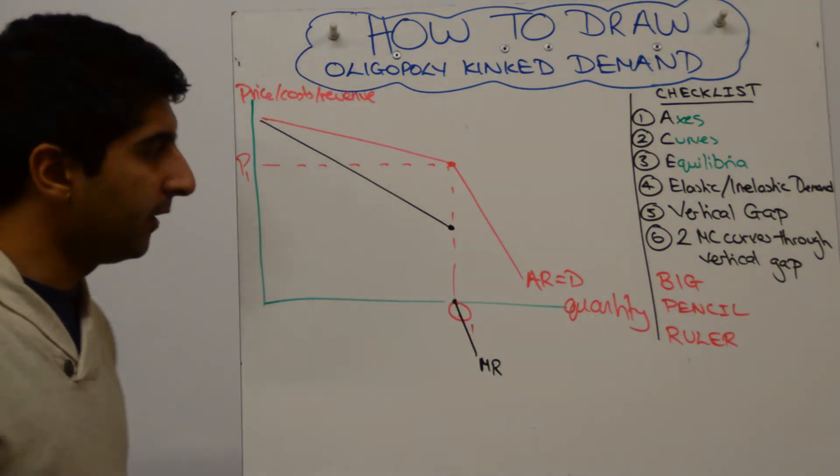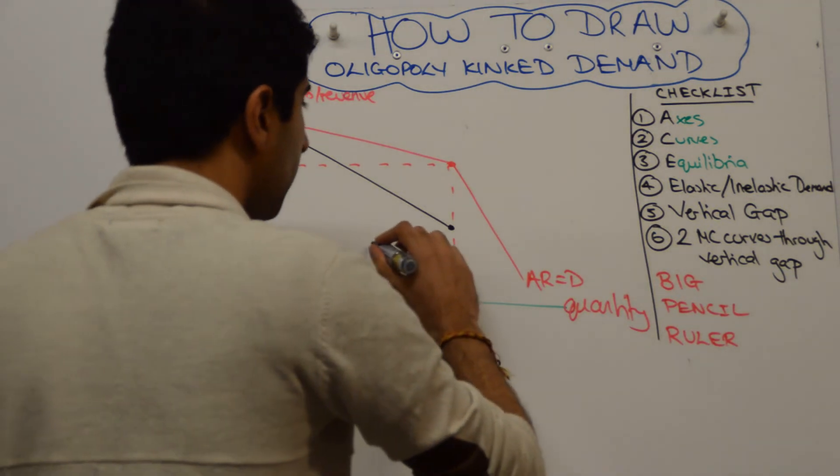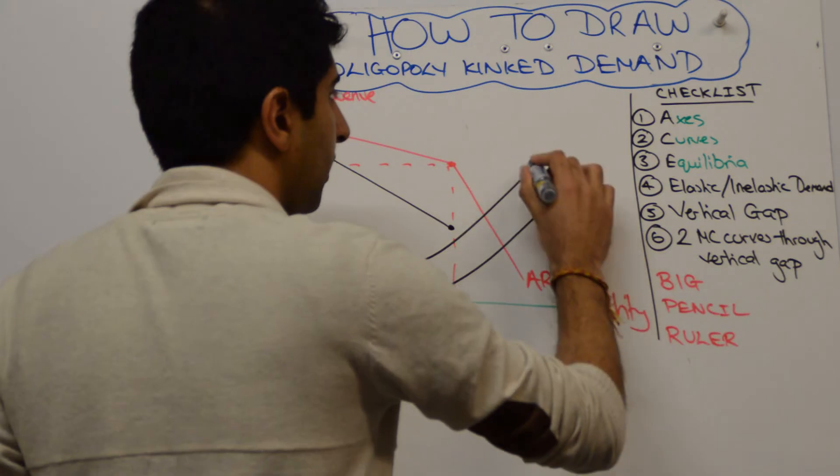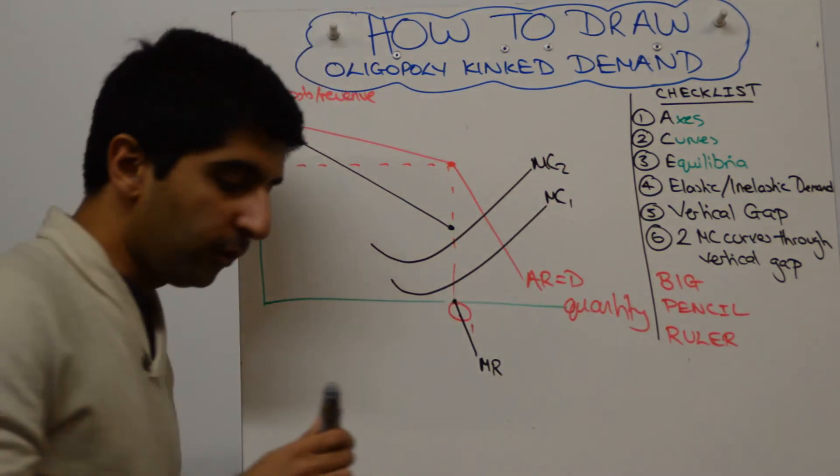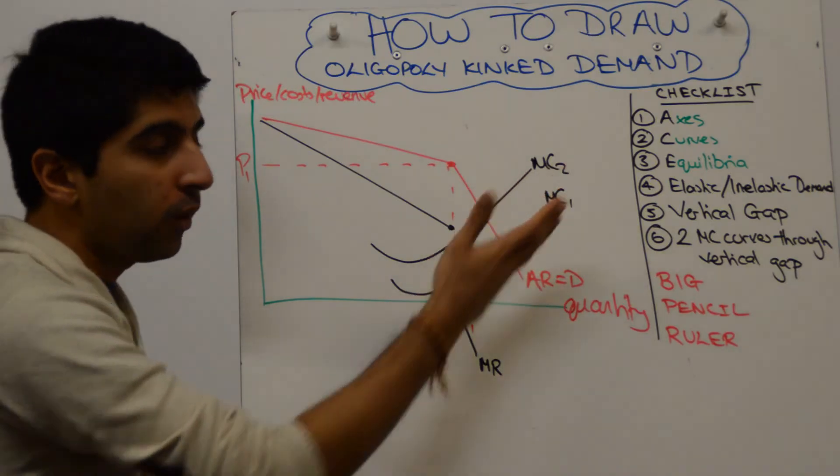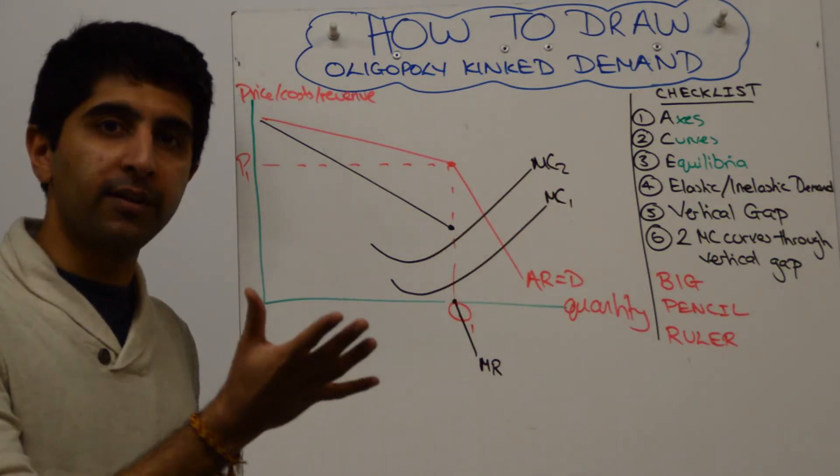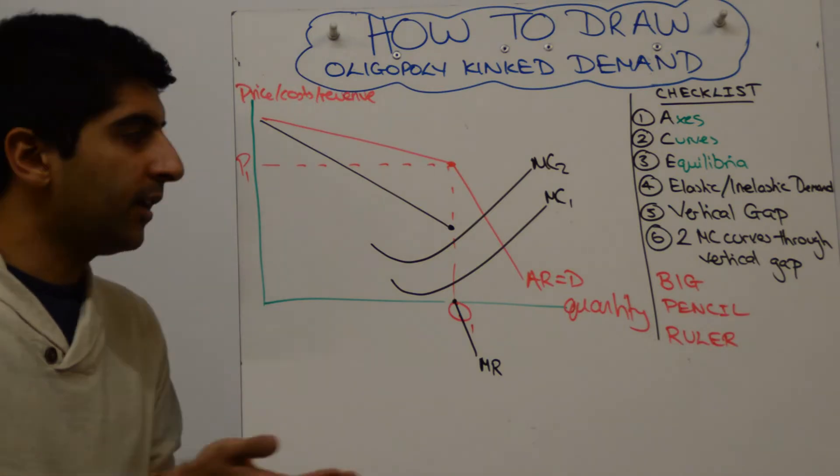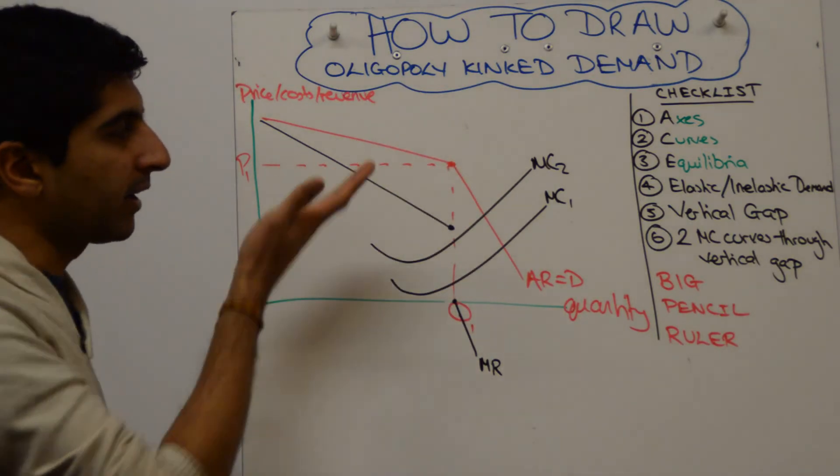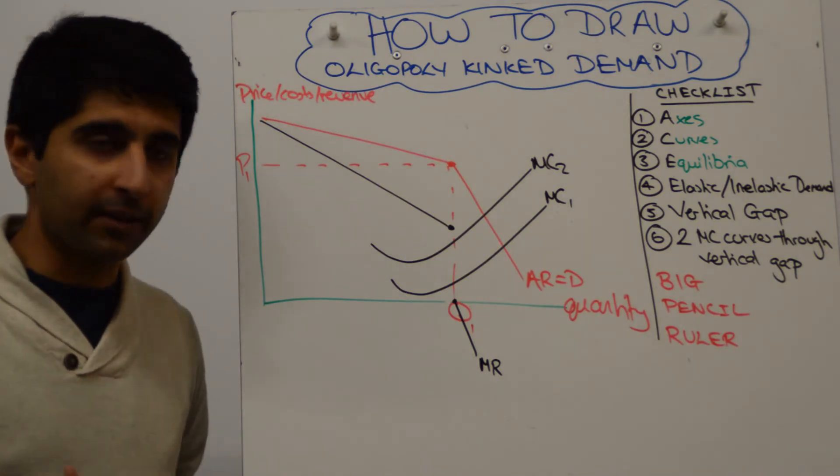Next we want to draw is the marginal cost curves. So draw two marginal cost curves. Let's say MC1 and MC2, but those two marginal cost curves should be in the vertical gap. The lower one is MC1, the higher one is MC2, making the point that even if costs rise, as long as they rise within this vertical gap, we will get back to P1 if this firm is a profit maximizer.